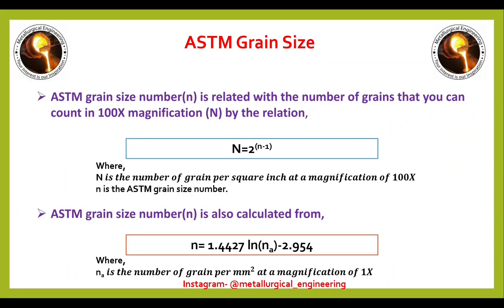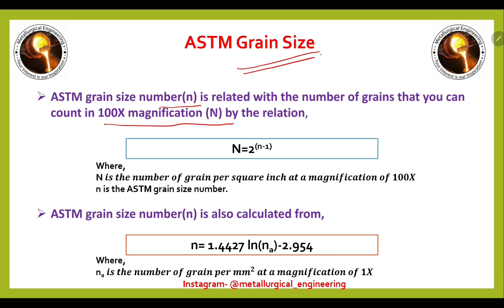In this video we will see the ASTM grain size. The ASTM grain size number, small n, is related with the number of grains that you can count in 100x magnification — capital N — by the relation: capital N is equal to 2 to the power (small n minus 1), where capital N refers to grains per square inch and small n is the ASTM grain size number.